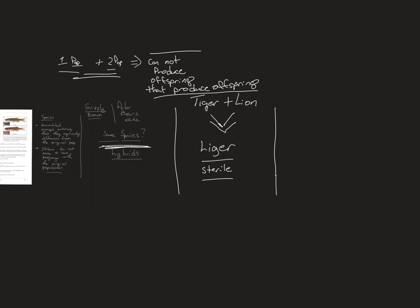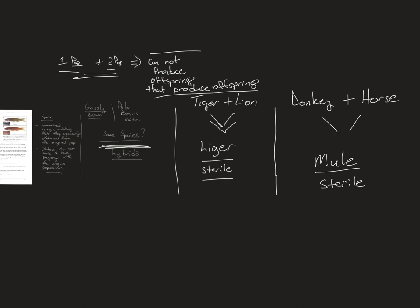Another good example is a donkey and a horse. Those two are very similar — like a tiger and a lion — and they can come together and make a mule. Mules are in between a horse and a donkey in size, smarter than a horse, not as bullheaded as a donkey, bigger than a donkey so they can carry more weight. But the mule is sterile — you cannot produce any more offspring from it.